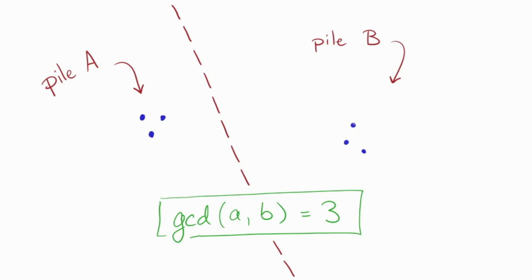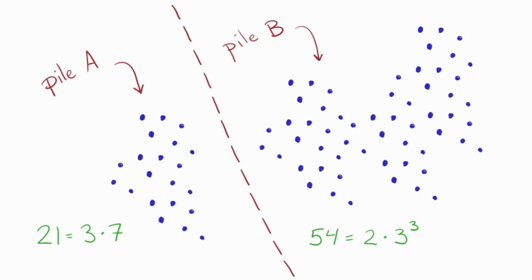So does it really work? Here's the actual pile sizes. They were 21 and 54. Factoring these, I can see that indeed they have a GCD of 3. So it does seem to work, at least in this example. I claim it always works if you follow the process that I demonstrated.